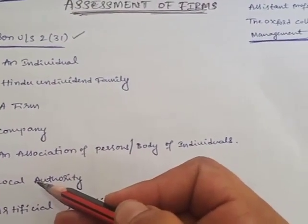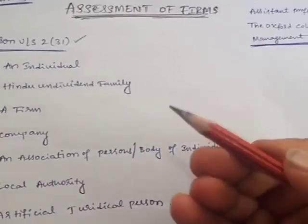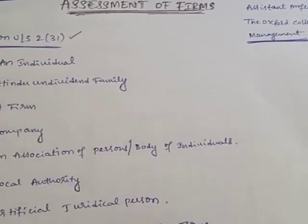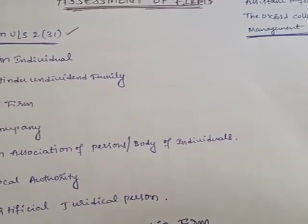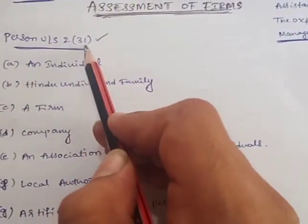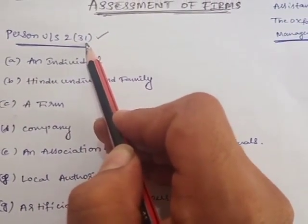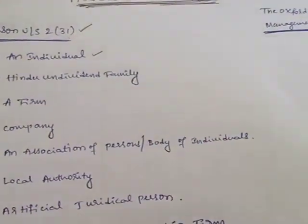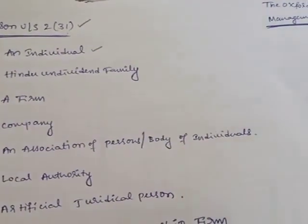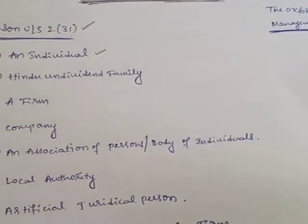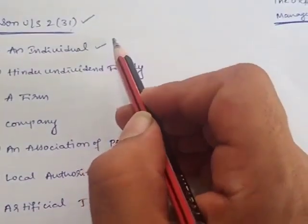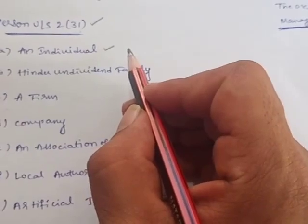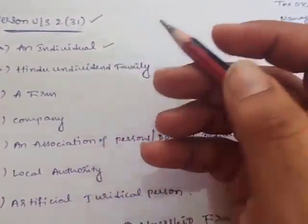In income tax, tax is a compulsory payment made by each and every citizen of a country. As an individual, one has to pay tax to the government. Who is eligible to pay tax to the government is specifically mentioned under Section 2(31) of the Income Tax Act, 1961. The first category is individual — normal individual persons. If your income is exceeding the exempted limit as per the Finance Act, you are eligible to pay tax.